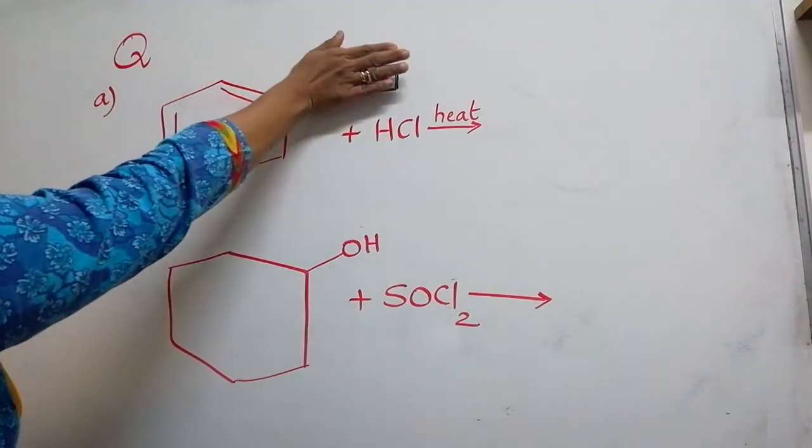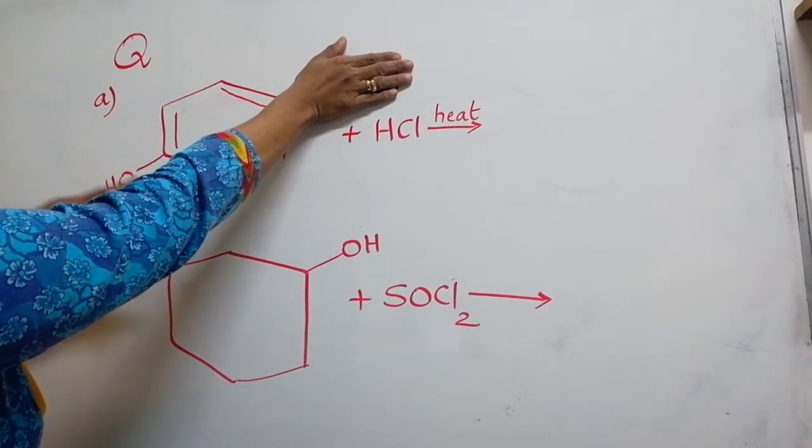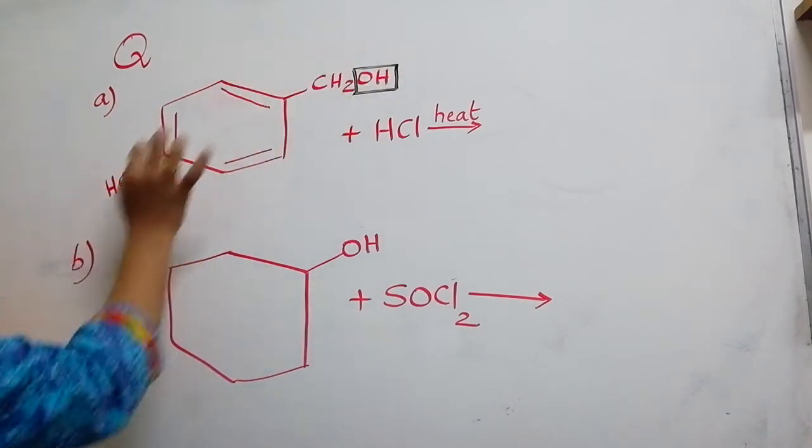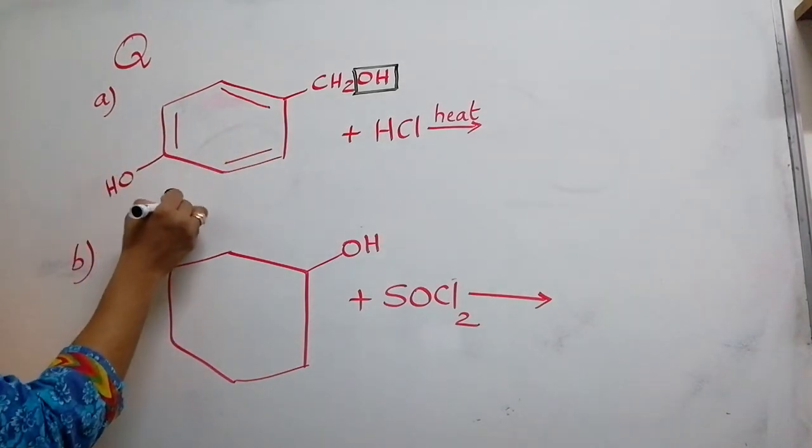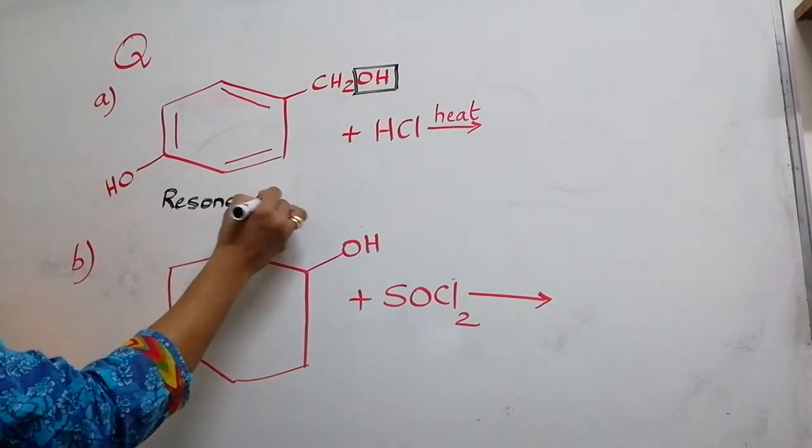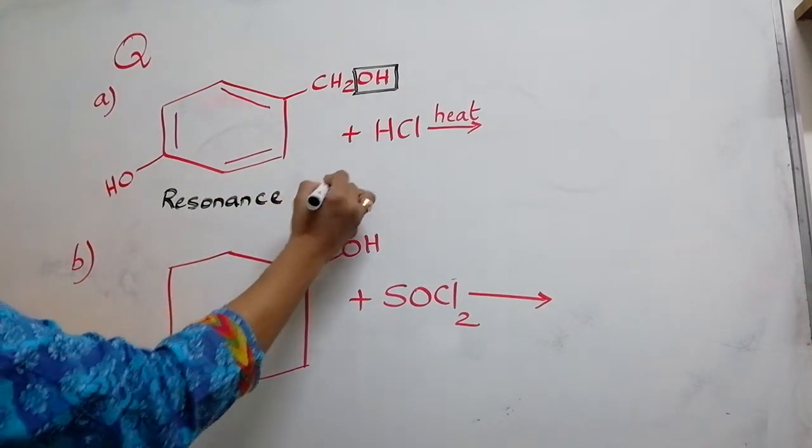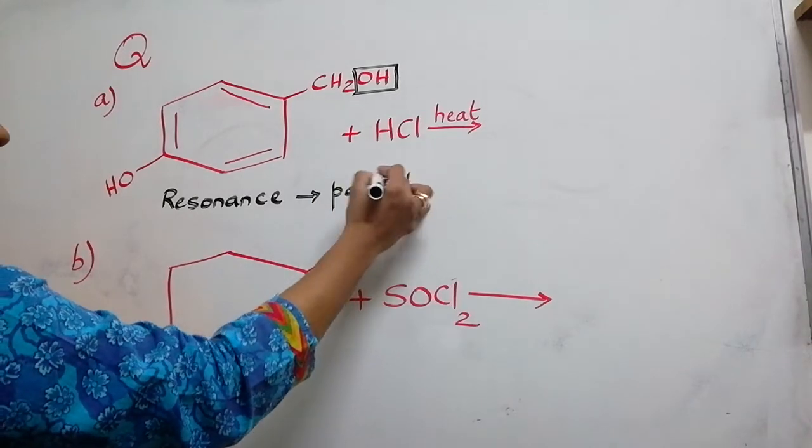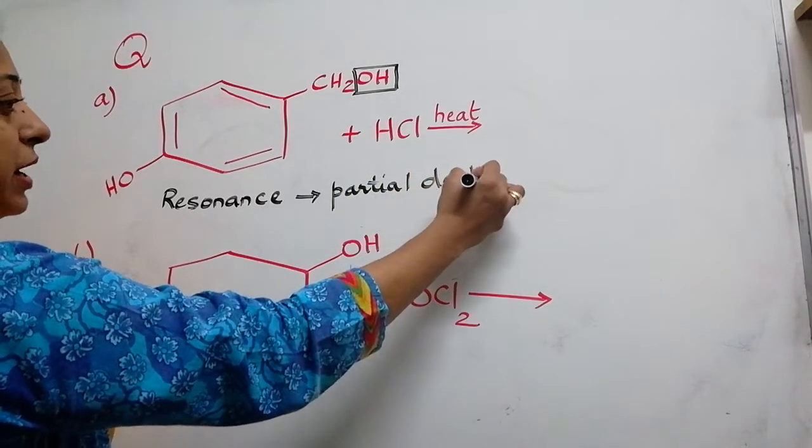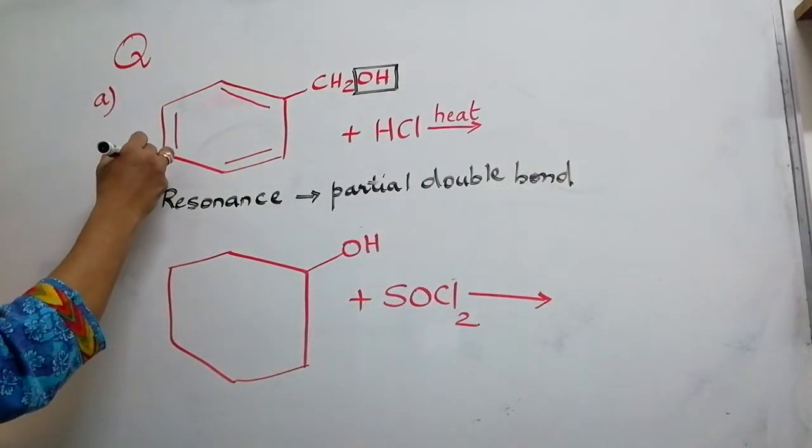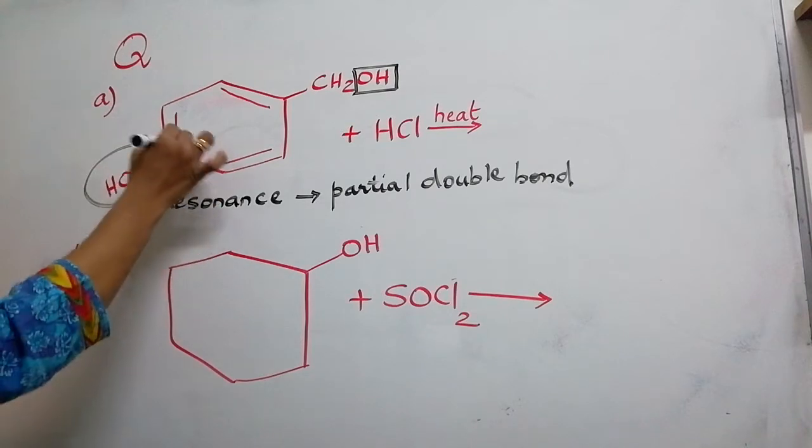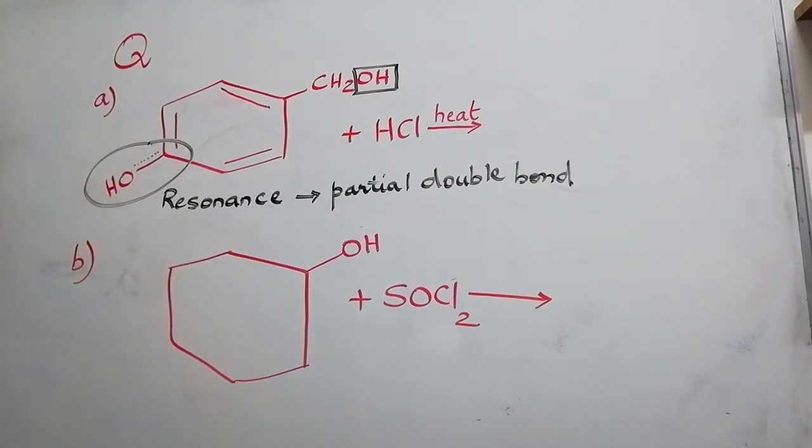When I observe this particular structure carefully, this may be looking like phenol and we all know that phenol undergo resonance. Phenol undergo resonance which you studied in class 11 and resonance leads to partial double bond. Where do we find this partial double bond in this structure? The partial double bond is noticed over here in this area as a result of which the nucleophilic substitution reaction becomes difficult or replacement with halogen becomes difficult.